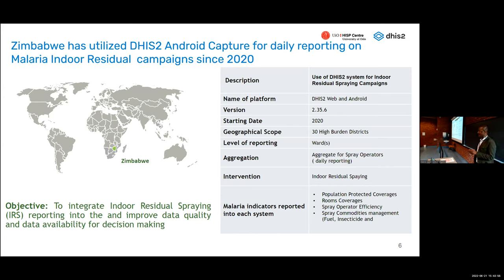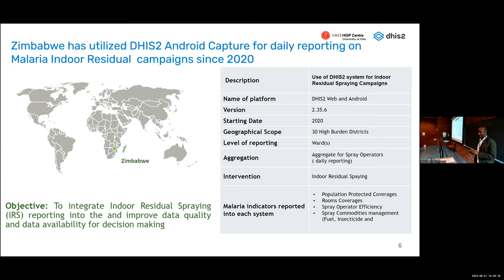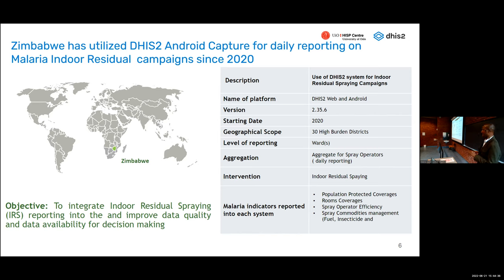Generally, our data is reported as aggregates — it is consolidated at the district level. The intervention we're focusing on is indoor residual spraying. The indicators we're tracking include population protected, coverages, room coverages, and spray operator efficiency, where we can follow the efficiency of each and every spray operator, as well as spray operator commodities management, including fuel, insecticide, and other trackable items.